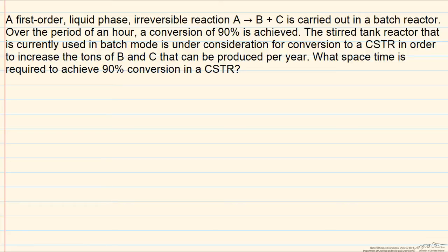We are going to use this information to determine what space time is needed in order to achieve that same conversion of 90% in a continuous stirred tank reactor. We are going to go through a procedure whereby we go through three steps in order to set up the material balance for this system.